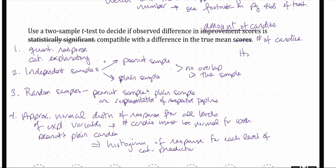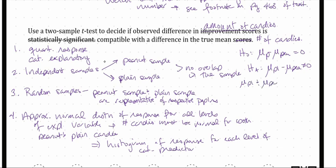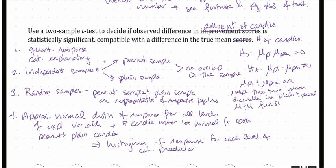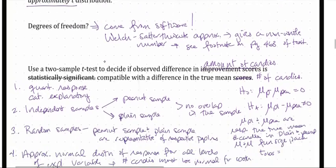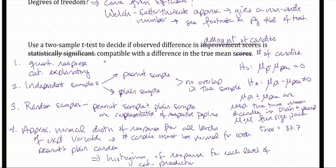Now we can state our hypotheses. The null hypothesis is H₀: μ-plain minus μ-peanut = 0. The alternative hypothesis is Hₐ: μ-plain minus μ-peanut ≠ 0 — that there is a difference in the true mean response. Here, μ-plain and μ-peanut are, respectively, the true mean number of candies in plain and peanut M&M fun-size packs. Our test statistic t-observed was found to be 37.78.